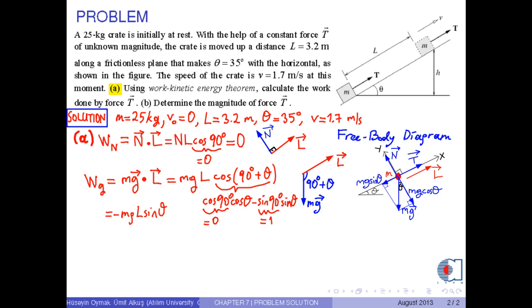Now we can put the numerical values into the corresponding places. As a result, we obtain negative 449.68 joules.